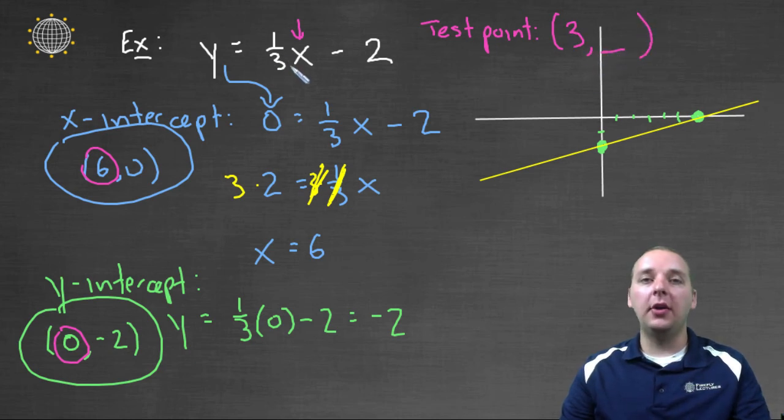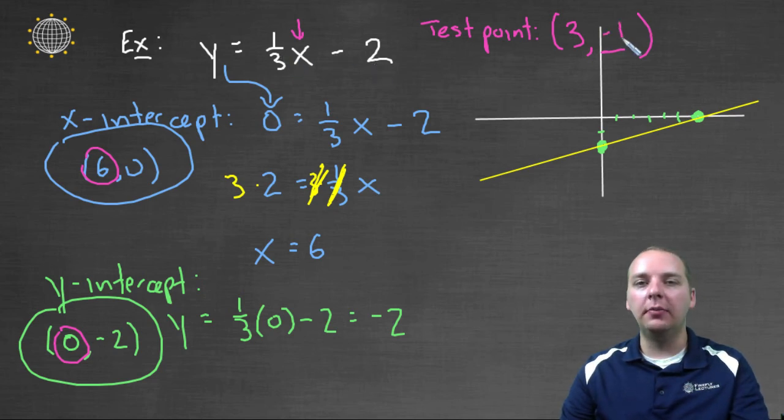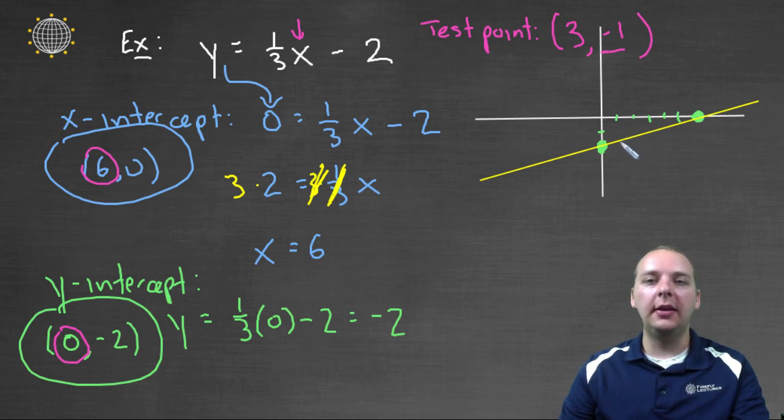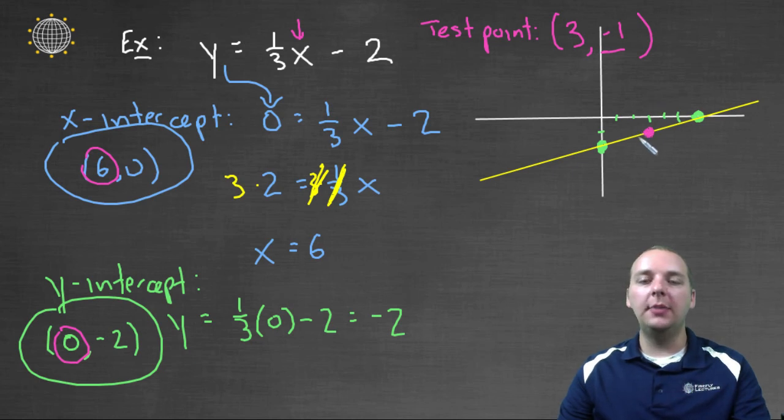And let's see what y value that corresponds to. One third times three would be one. One minus two is negative one. So let me cross my fingers and hope that winds up on my yellow line. If it's on my line, then I'm convinced that we've done everything correctly. If it's not, then we're in trouble and we need to go back and see where we made a mistake. But, one, two, three, comma, negative one, is right here, and it's perfectly on the line where it should be.